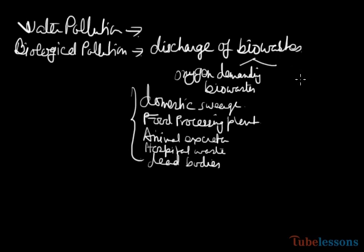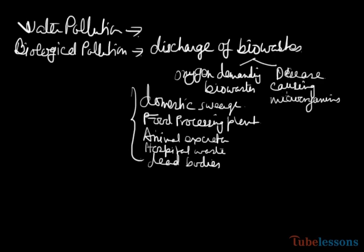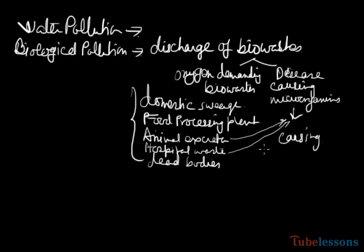Another type of bio-waste is disease-causing microorganisms. Disease-causing microorganisms come from excreta of animals as well as from hospitals. These two types of bio-wastes are normally contaminated with disease-causing microorganisms, which are carriers causing common waterborne diseases.